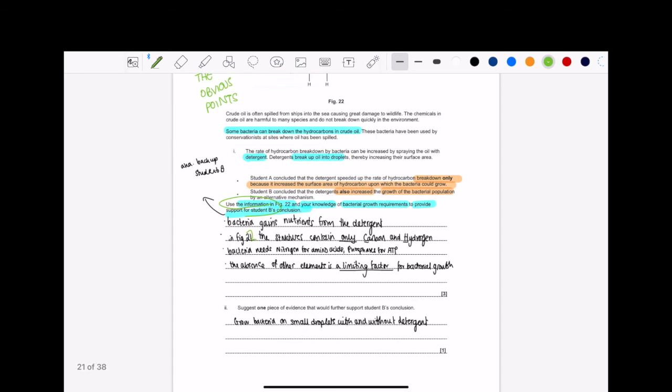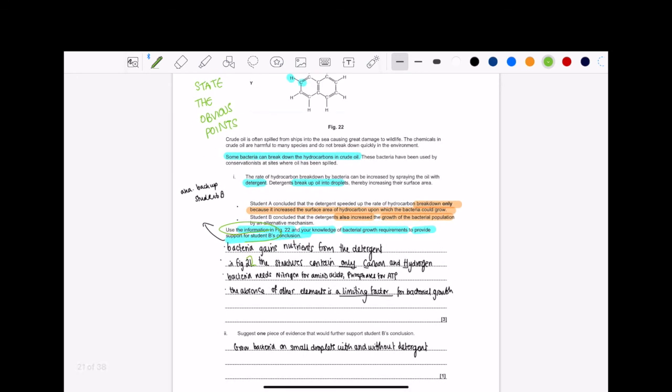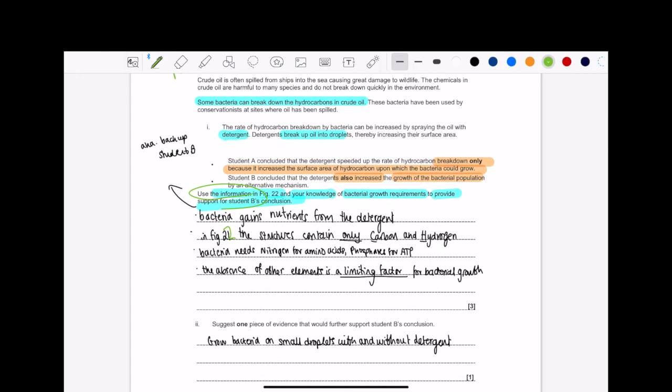Now, when we go on to the second question, as I said, not many people got this. It says, suggest one piece of evidence that can further support Student B's conclusion. Here's what I like to do, right, when questions are worded in this way. I like to think what would happen before and after a change. So Student B, as I said, is saying that, yeah, the detergent increase the growth of the bacterial population, but what if, right, just grow the bacteria on droplets with and without detergent, so you can see the effect with and without it, and that's really it. It's not that hard. Just need to think the before and after effects of it.